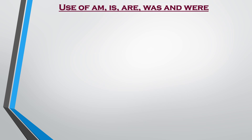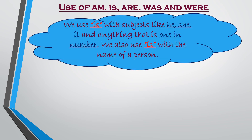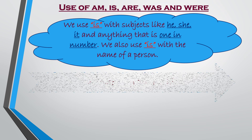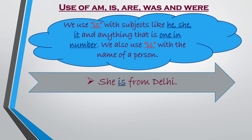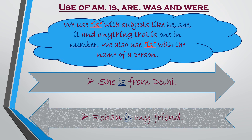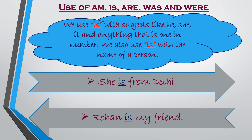The words 'was' and 'were' are used to talk about things that have already happened. We use 'is' with subjects like he, she, it, and anything that is singular in number. We also use 'is' with the name of a person. For example: 'She is from Delhi' — she is the singular subject, so we use 'is.' Second: 'Rohan is my friend' — Rohan is a person's name, singular, so we use 'is.'